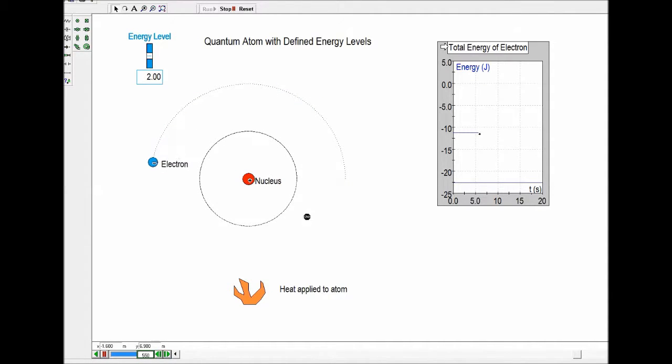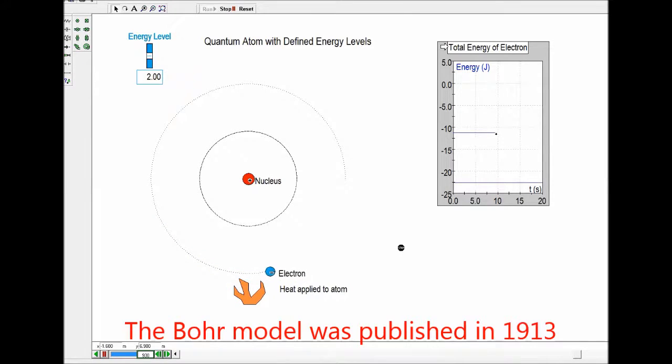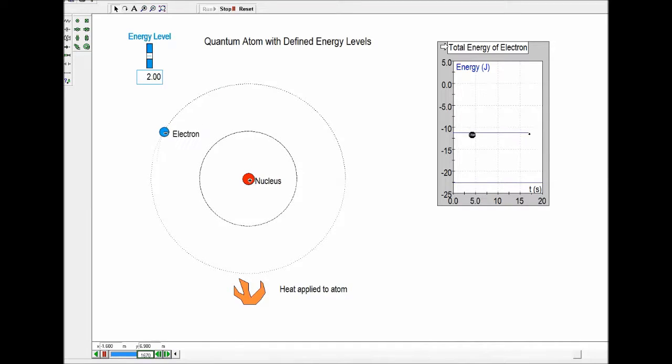Bohr used orbits to describe these quantum states and was very successful with his model. You can see this is a different energy here on the graph. It's a constant energy, but it's a very large difference from the original energy. This is quantum state number two.